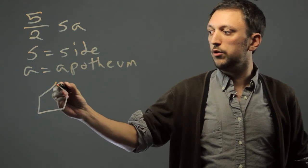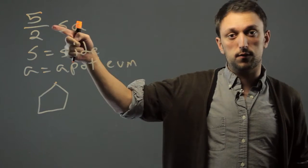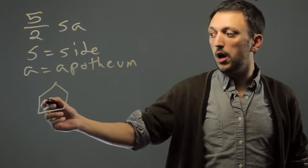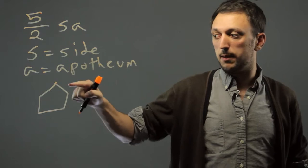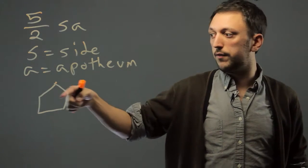If we have a pentagon, it usually looks like a house. Now keep in mind, this is the formula for a regular pentagon. The side would be the same for all five, and the apotheum would be the same for all five sides.